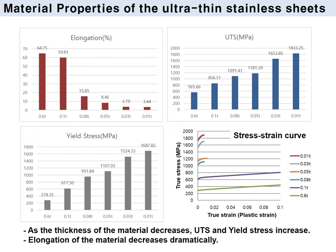This page presents the material properties of ultra-thin stainless steel sheets. As shown in the figure, the elongation of the material decreases dramatically as the thickness decreases. For 0.1 mm thickness, the elongation is nearly 60%. However, for 0.01 mm thickness, the elongation is only 3.44% — very low. At the same time, ultimate tensile strength and yield strength are increasing. For 0.03 mm, the ultimate tensile strength is 1653 MPa and the yield stress is 1524 MPa. This is due to the cold rolling process, which increases the strength of the material.